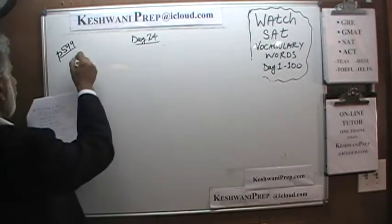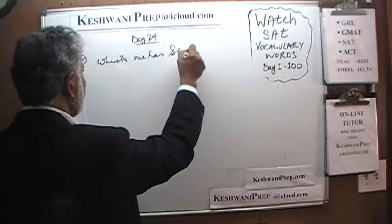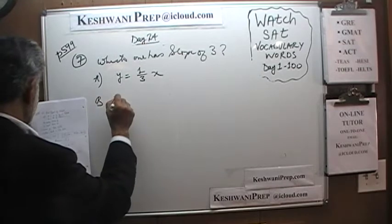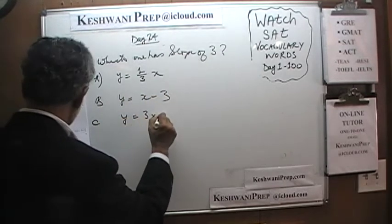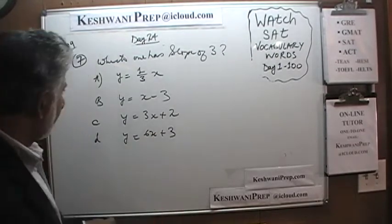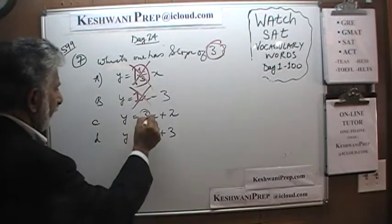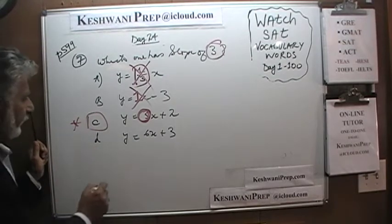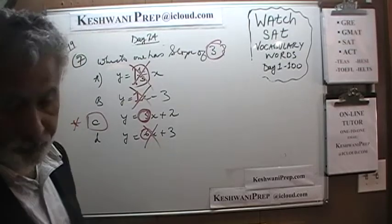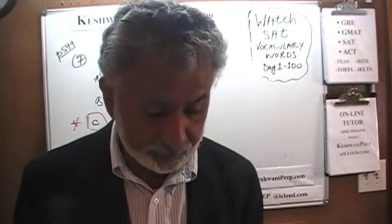Number seven asks which equation has a slope of three. Choice A: y equals one-third x — slope is one-third, not it. Choice B: y equals x minus 3 — slope is one, not it. Choice C: y equals 3x plus 2 — slope is three, that's it. Choice D: y equals 6x plus 3 — slope is six, not it. The answer is C. Make sure you're looking for the slope and not the y-intercept.